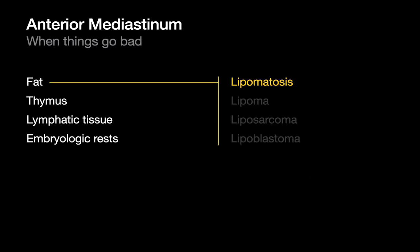What can cause an anterior mediastinal mass when the fat constituent goes wrong? Lipomatosis is probably the most common answer. There are other things like lipomas and liposarcomas, but they're very, very rare, so we'll put them aside. Lipomas are interesting because they're a common disorder elsewhere in the body, but not in the anterior mediastinum.